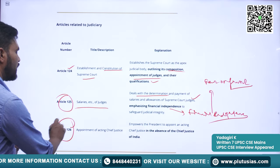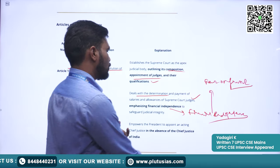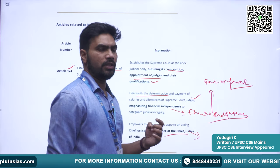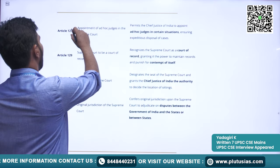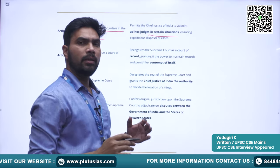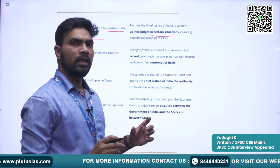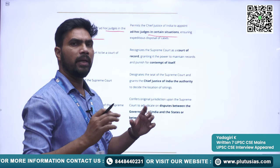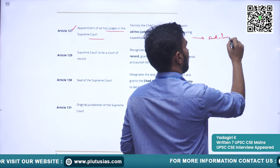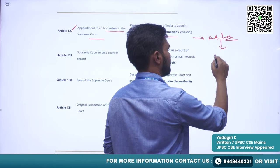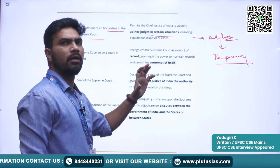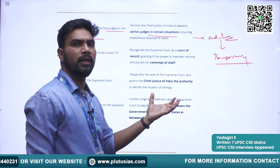Article 126 covers the Appointment of Acting Chief Justice — the President can appoint an Acting Chief Justice whenever needed. Article 127 covers the Appointment of Ad-Hoc Judges to the Supreme Court. Whenever the pendency of cases is increasing, the Chief Justice of India can appoint Ad-Hoc Judges — ad-hoc meaning temporary. The Chief Justice of India can appoint Ad-Hoc Judges whenever he feels there is increasing pendency of cases.